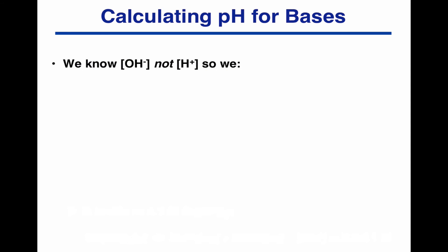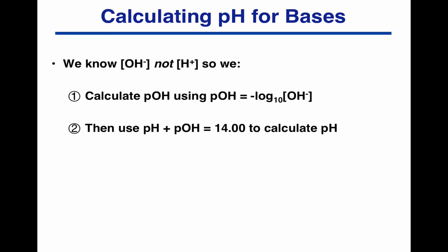So we've just worked out the OH minus concentration, not the H plus concentration. So how do we work out the pH? Well, first of all, we calculate the pOH using the definition we saw earlier. pOH is minus log to the base 10 of the OH minus concentration. And then we just simply use pH plus pOH equals 14 to calculate the pH.